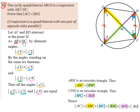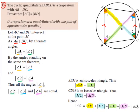As AB is parallel to DC, given in the question, by the alternate angles theorem, angle 1 must be equal to angle 2. If we have a set of parallel lines and a transversal cutting between them, the alternate angles are equal. So angle 1, drawn in orange, is equal to angle 2, drawn in green.